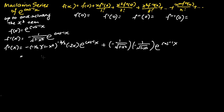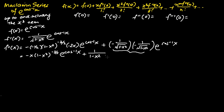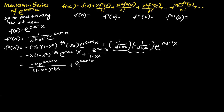We next simplify f''(x). The negative times negative one-half times negative 2x gives negative x, multiplied by 1 minus x squared to the power of negative 3 over 2, times e to the power cosine inverse x. For the second term, multiplying those two terms together gives 1 over 1 minus x squared times e to the power cosine inverse x. So f''(x) equals negative x times e to the power cosine inverse x over 1 minus x squared to the power 3 over 2, plus e to the power cosine inverse x over 1 minus x squared.